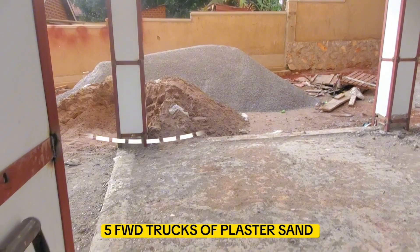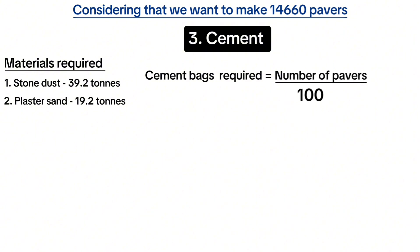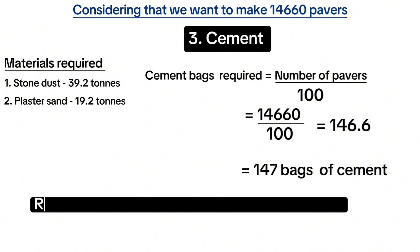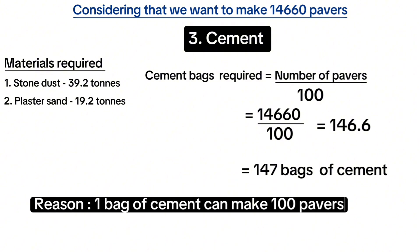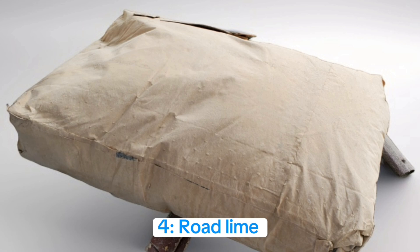The third material we need is cement, and this is also simple. Cement bags required equals the number of pavers divided by 100, which is 14,660 divided by 100 to get 146.6, equivalent to 147 bags of cement. This is because one bag of cement makes 100 pavers. Therefore, to make 14,660 pavers, you purchase 147 bags of cement — and that's the exact number of bags we bought.